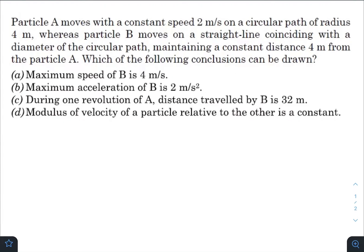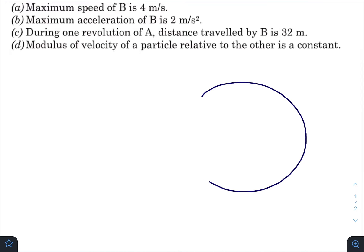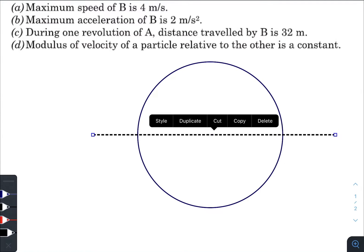Let us draw the initial situation, or I should say, let us consider an initial situation of particles A and B. So let this be the circular path of radius 4 m.